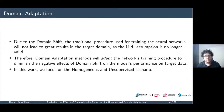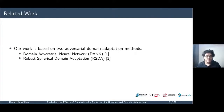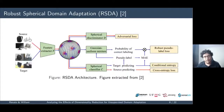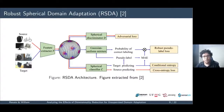Our work focuses on the homogeneous and unsupervised scenario, where the domains share the same classes and only unlabeled data are available in the target domain. Our work is mainly based on two adversarial domain adaptation methods. The first is the Domain Adversarial Neural Network, where a domain classification task — which classifies each sample based on the domain it belongs to — is added to the network and trained adversarially using a gradient reversal layer to encourage domain invariance.